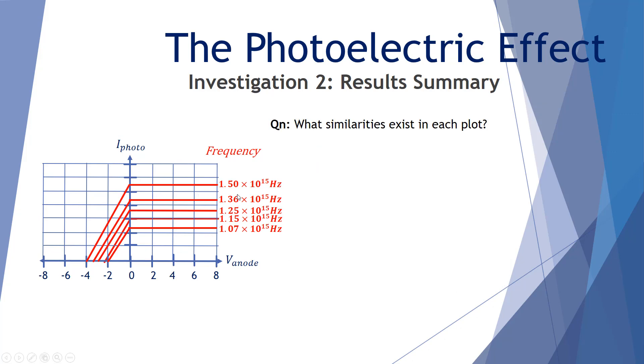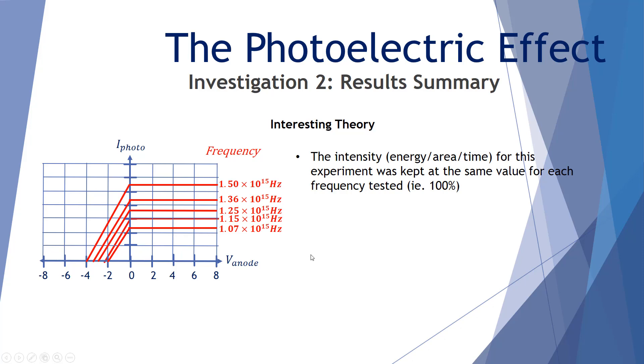So what similarities exist in each plot? Well, we notice that all the plots have a gradient of zero when the anode voltage is positive. And the main differences? Well, there's an obvious difference here. The x-intercepts are different for all plots.